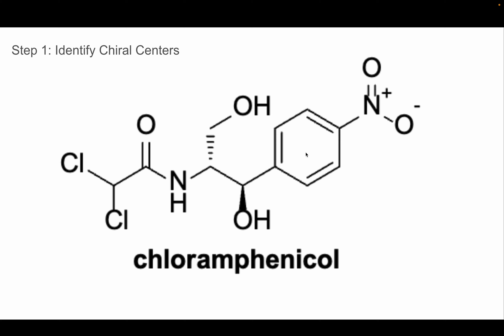We wouldn't count any of the benzene carbons because they only make three bonds — they're sp2 hybridized. And over here, this nitrogen is only making three bonds; it only has three different groups and is sp2 hybridized.